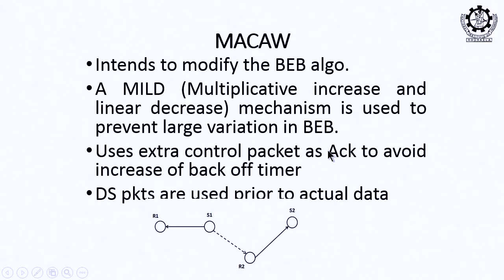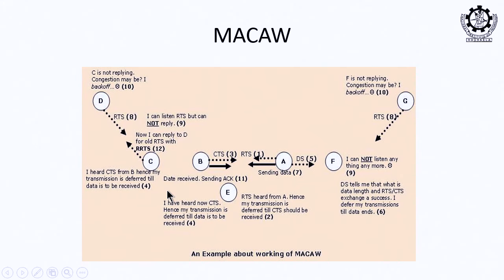MACA-W also introduces an acknowledgement signal to avoid increases in the backup timer, and a special DS (data sending) packet used prior to actual data transmission. The DS packet indicates to neighbors the duration for which the sender and receiver will be occupied, allowing neighboring nodes to defer their transmissions accordingly.